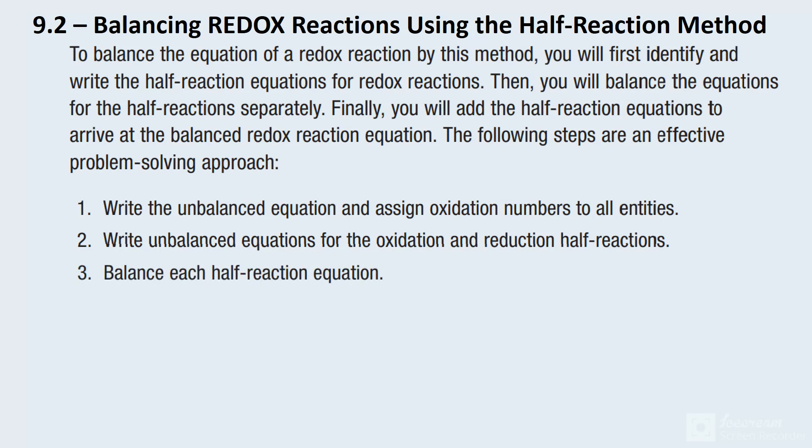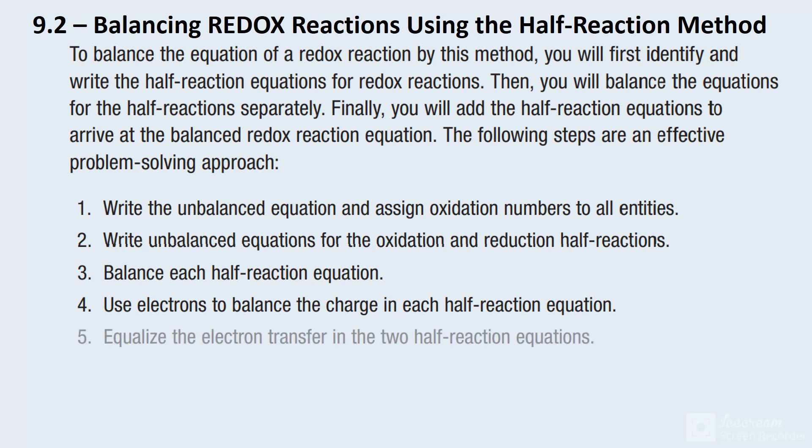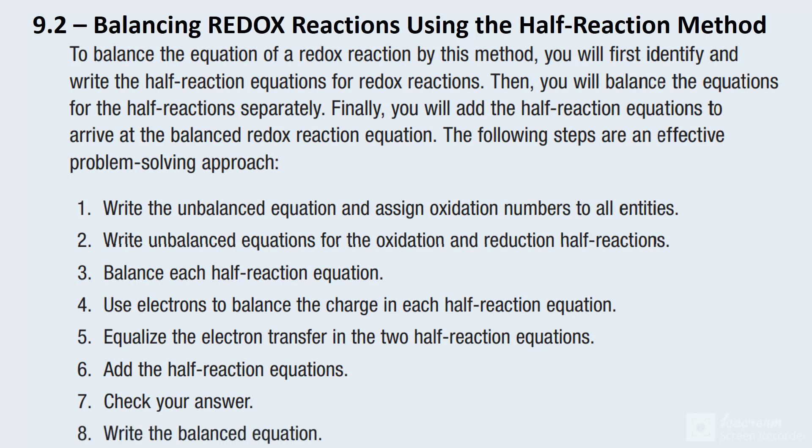We're going to balance those half-reactions individually. Then we're going to use some electrons to balance the charges of those individual reactions. And then the electrons are going to be different, so for instance, if one reaction needed two electrons, one needed three, you find a common denominator of six and you do some multiplying. We'll be doing some multiplying in that step. And then we're just going to put them all together and then double check that the charges are correct on both sides. And then lastly, just write out our final answer.